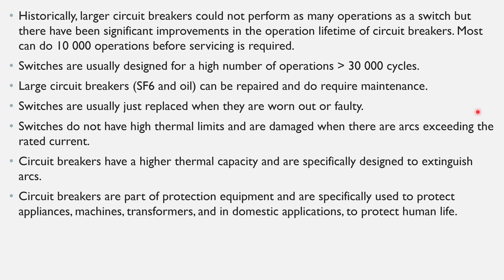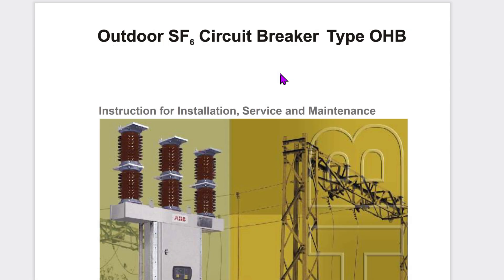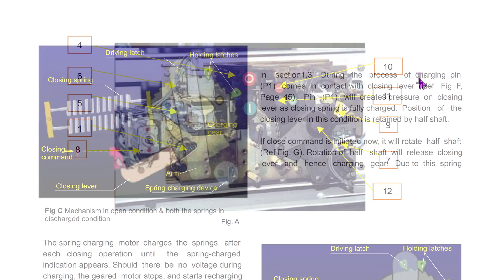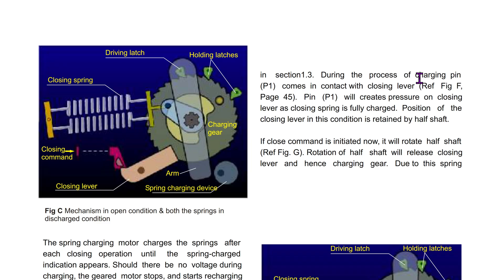Larger circuit breakers can be repaired and do require maintenance. This is particularly true for the sulfur hexafluoride, oil, and air blast circuit breakers. Looking at this SF6 circuit breaker manual, you can see there are a lot of moving parts including gears, relays, pins, actuators, and springs, and after repeated operations these parts need to be maintained.